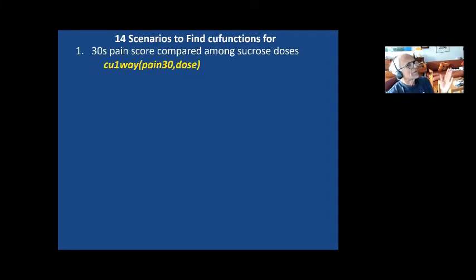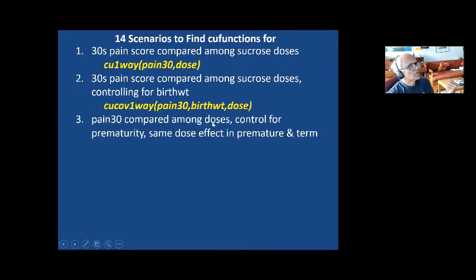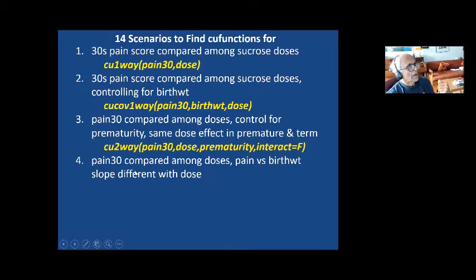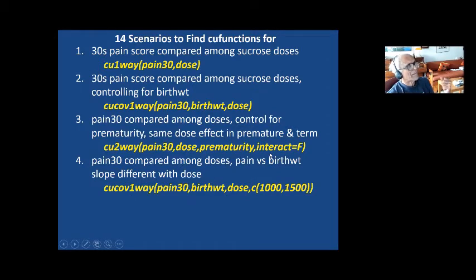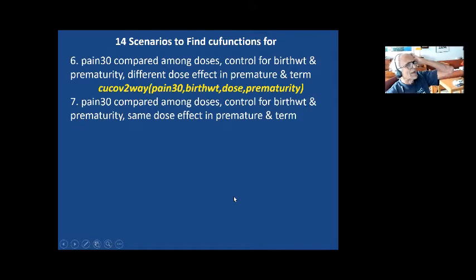To start with, if you're doing just a pain score among the three doses, you do one-way. If you control for birth weight, you do COV one-way with pain-30, birth-weight, and dose. If you also want to control for prematurity, you have CU two-way: pain-30, dose, prematurity, with no interaction. Or, going back, you can control for birth weight but allow the slope to be different with each dose. Similarly, in CU two-way, you can have an interaction. I won't go through all of these — there is a CU function for every combination of hypotheses you might want to test.